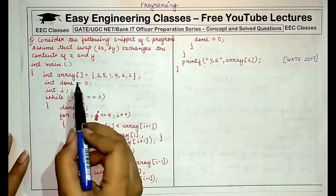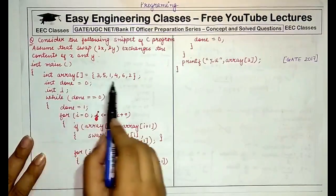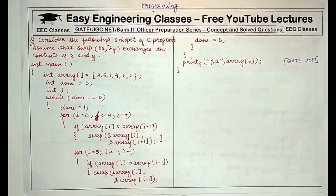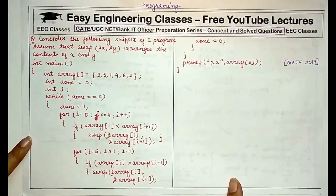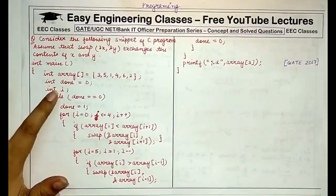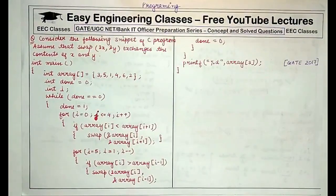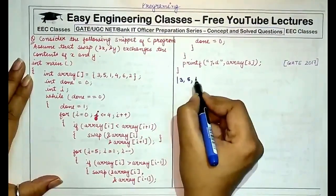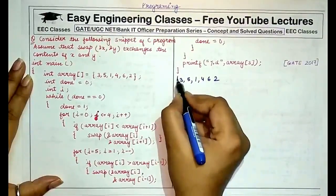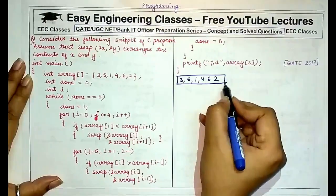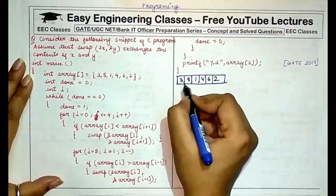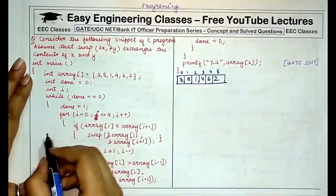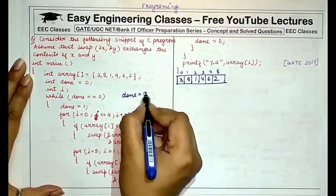This is a concept you must know. The function has an array given to you. Initially, a variable called 'done' is assigned the value zero, and it will control how many times the function runs. A variable i is declared. While done equals zero, we enter the loop. Our array is 3, 5, 1, 4, 6, and 2. Done is initially assigned the value zero.